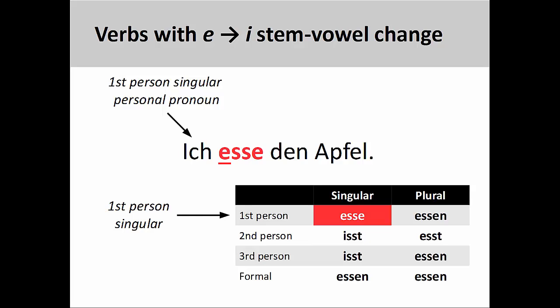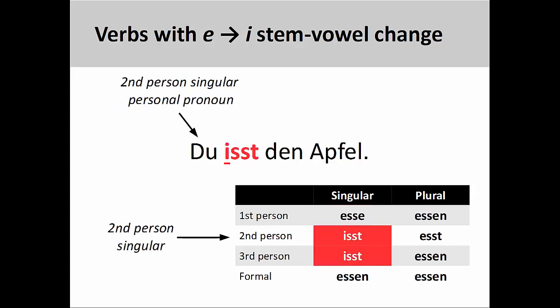The second group has a stem-vowel that changes from e to i. So although the first-person singular form of essen would be esse, as in ich esse den Apfel — I eat the apple — the second-person singular form would be isst, as in du isst den Apfel, you eat the apple. The third-person singular form would also be isst. The presentation on the present tense of regular verbs explains why these forms are similar; you may want to review that presentation.